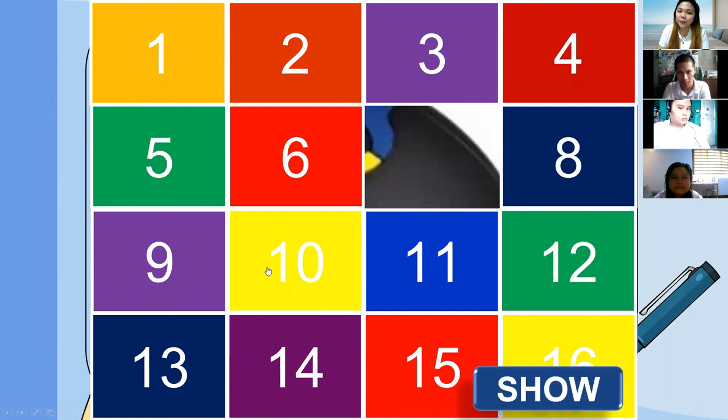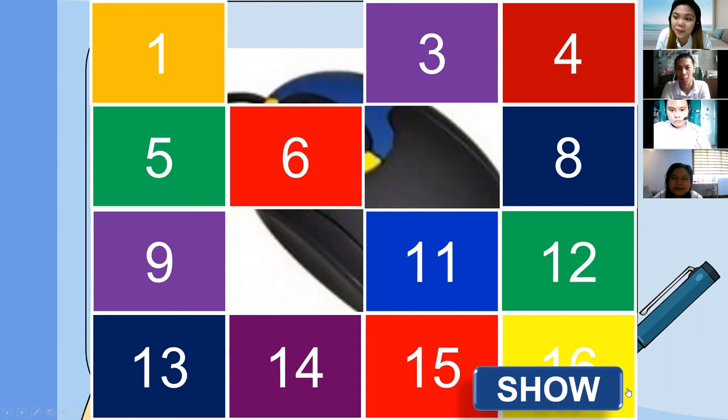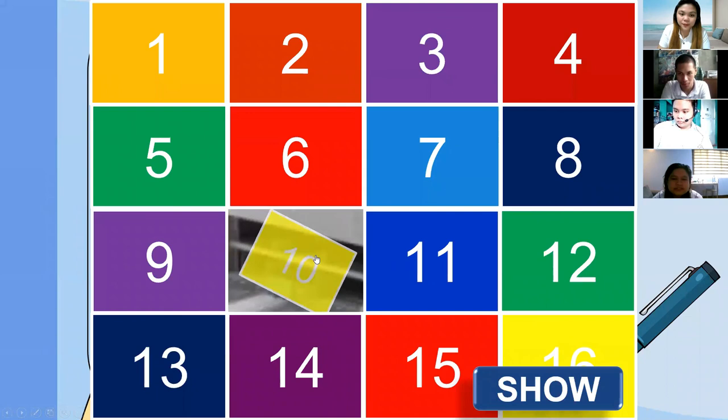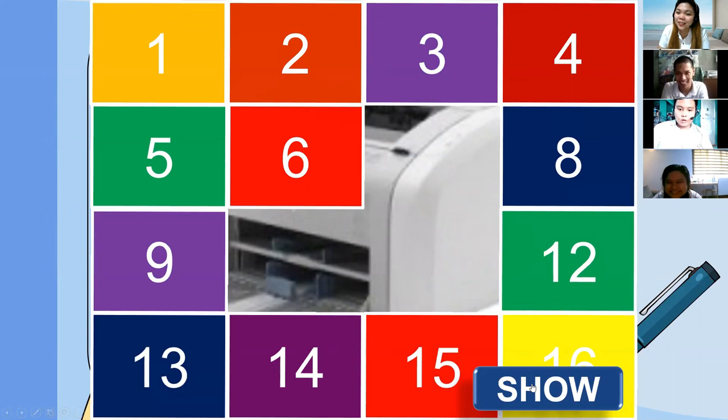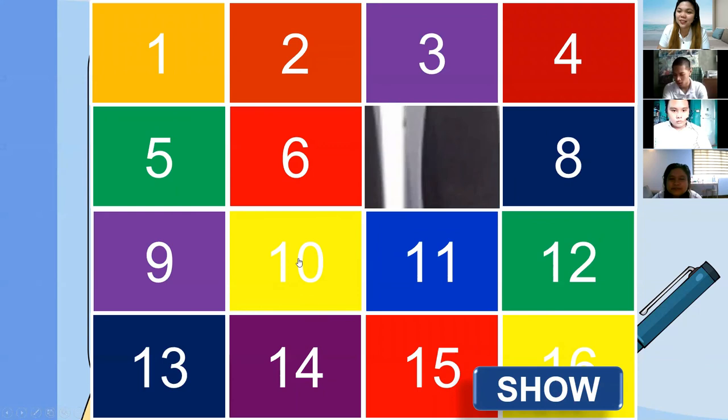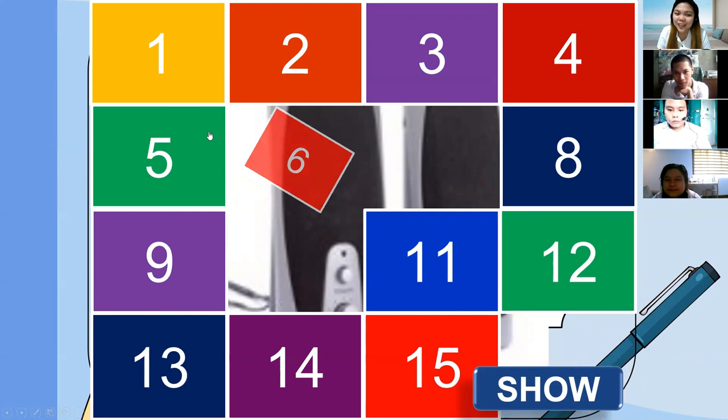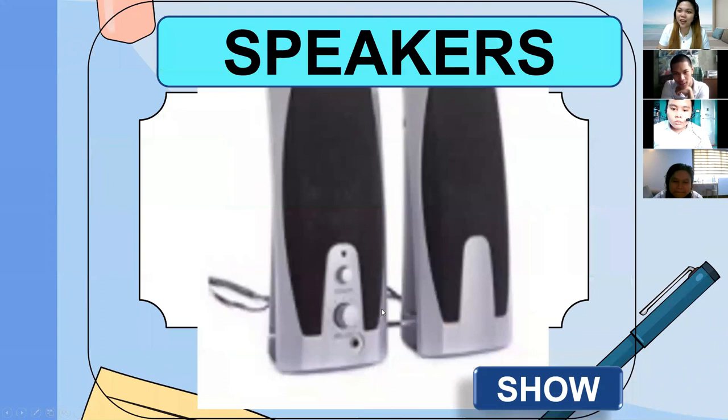Next — mouse. Alfrancis? Mouse. It is a mouse. Next — printer. Yes, Enzo? Printer. Very good. And last — is it hard? Yes, Aika, what's your answer? Speakers. Very good. So, do you love our lesson for today? Okay, good job, everyone.